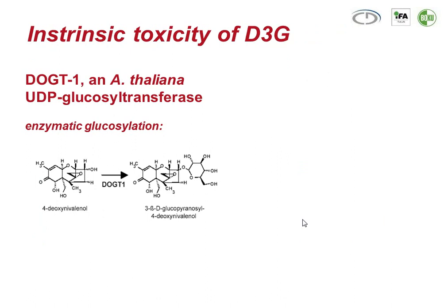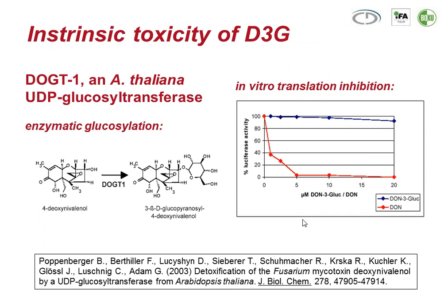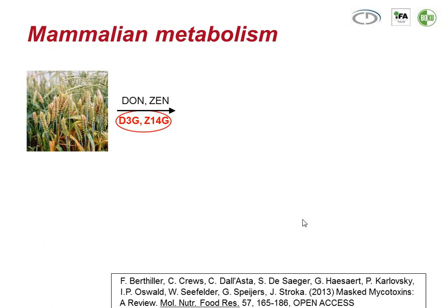What do we know about the toxicity of deoxynivalenol-3-glucoside? I mentioned that plants convert deoxynivalenol into the less toxic compound deoxynivalenol-3-glucoside. Looking at this graph — a representation of toxicity at the ribosome level — you see that deoxynivalenol (the red curve) is quite capable of inhibiting protein translation with increasing concentration of the mycotoxin, whereas deoxynivalenol-3-glucoside, the masked mycotoxin, barely inhibits it. So from that perspective, at least at the plant level, this is really a detoxification.